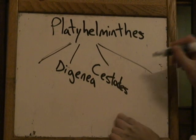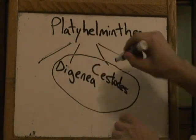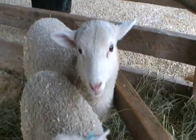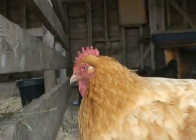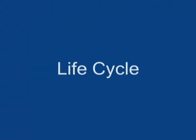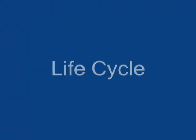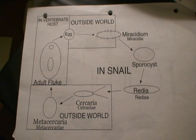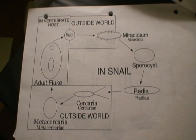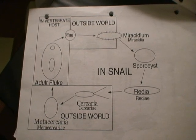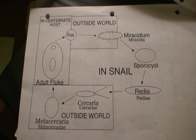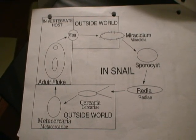The genus Fasciola contains flukes that infect sheep, hippos, humans, and a range of other vertebrates. The typical life cycle of flukes has a vertebrate host as its primary host, as well as an intermediate snail host.